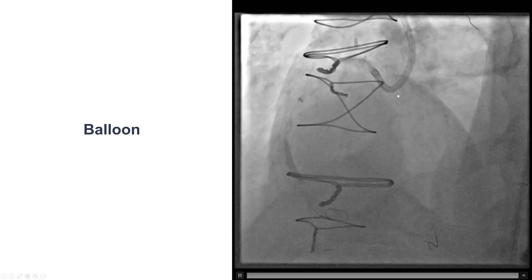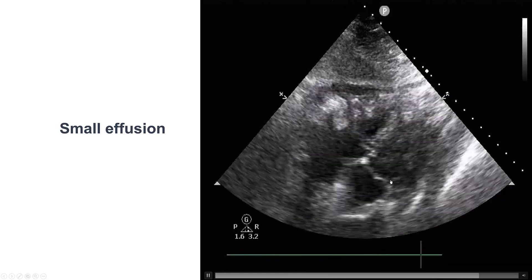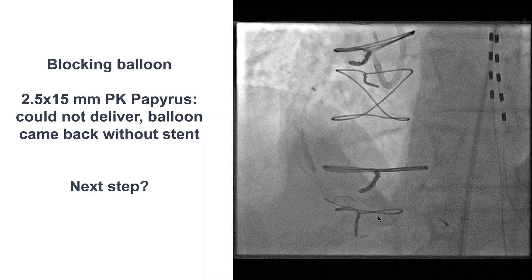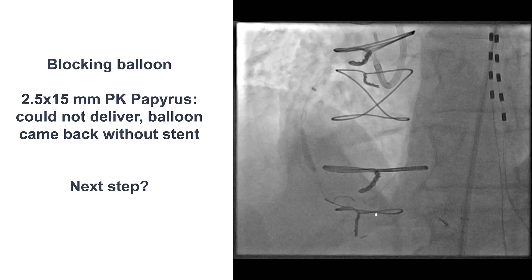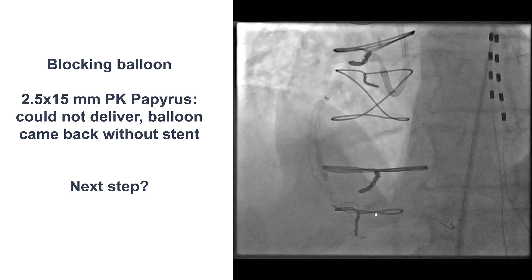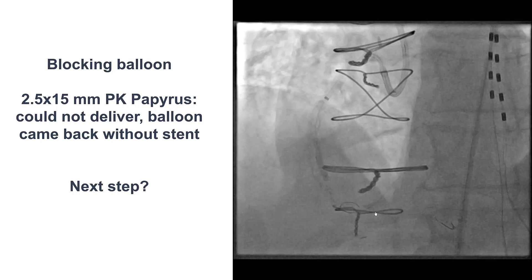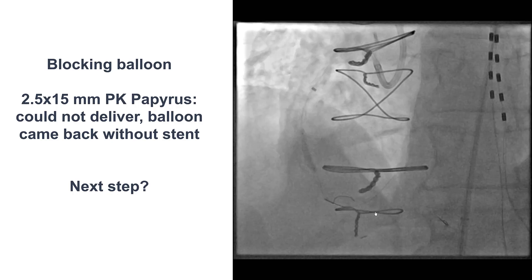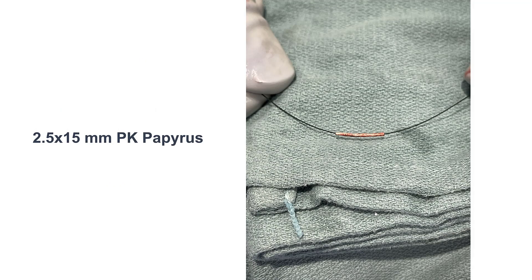Fortunately, we had an 8 French AL1 guide and an 8 French Trapliner. We advanced a second wire and a balloon to achieve hemostasis. We did an emergency echo that showed only a small effusion. But then we had a lot of difficulty — we tried to advance a 2.5 by 15 millimeter PK Papyrus that could not be reached, and when the Papyrus came out, it was only the balloon without the stent. Fortunately, we eventually found the lost stent — it had dislodged at the introducer.